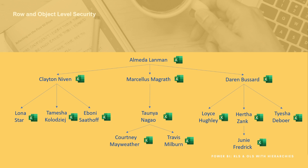What you sometimes see in this situation is that a separate Excel file is created for each individual with their own numbers. This is really complicated to manage especially as the organization grows and if there's a high interdependency on others. For instance if Lona's numbers change — who is in the bottom left — then Clayton's have to change and Almeda's as well.